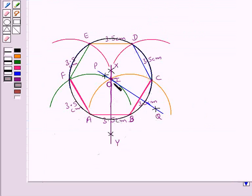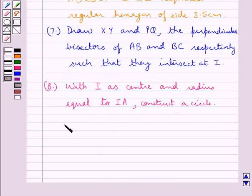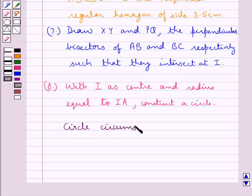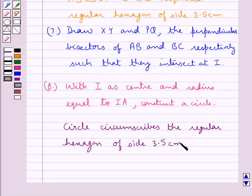So we get this circle with I as center and radius equal to IA. As you can see, this circle passes through all the vertices of the hexagon ABCDEF. Thus we can say, the circle circumscribes the regular hexagon of side 3.5 cm.